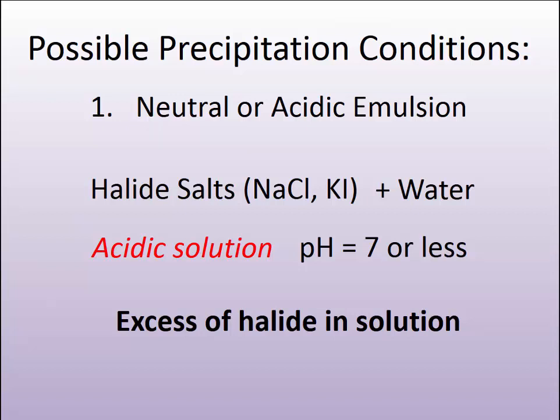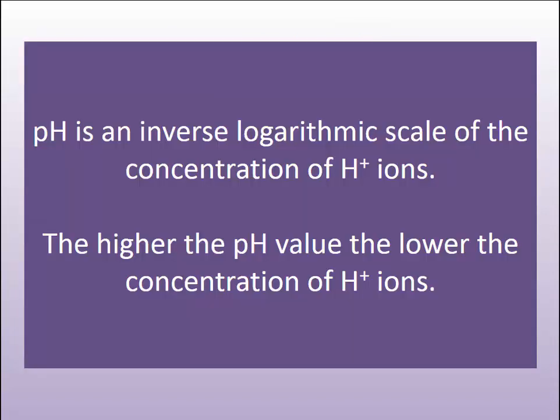These are critical adjustments in the emulsification process. Small changes in pH — remember, it is a log scale — produce large changes in the availability of H⁺ ion, or acid, in the chemistry.